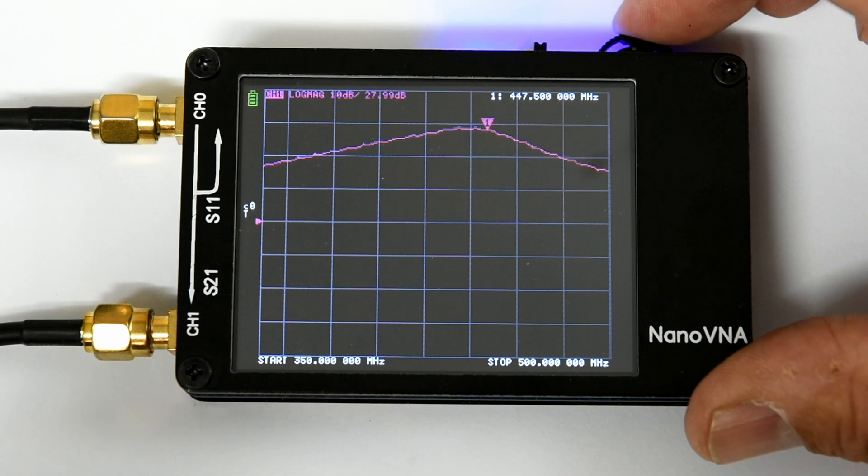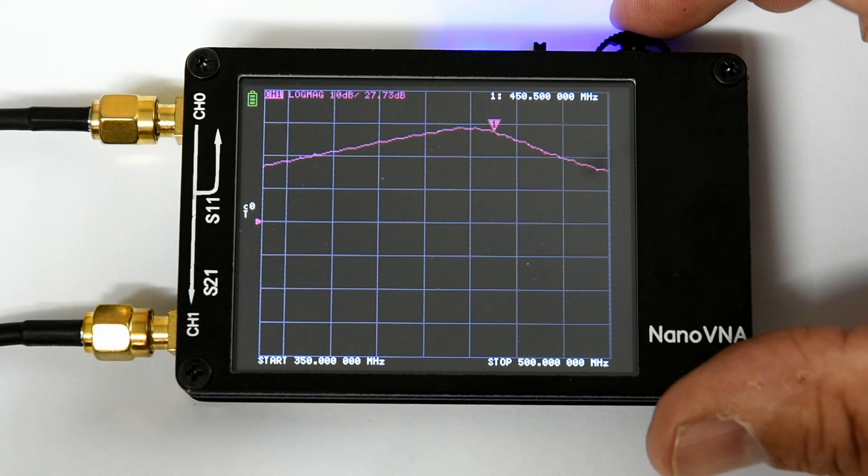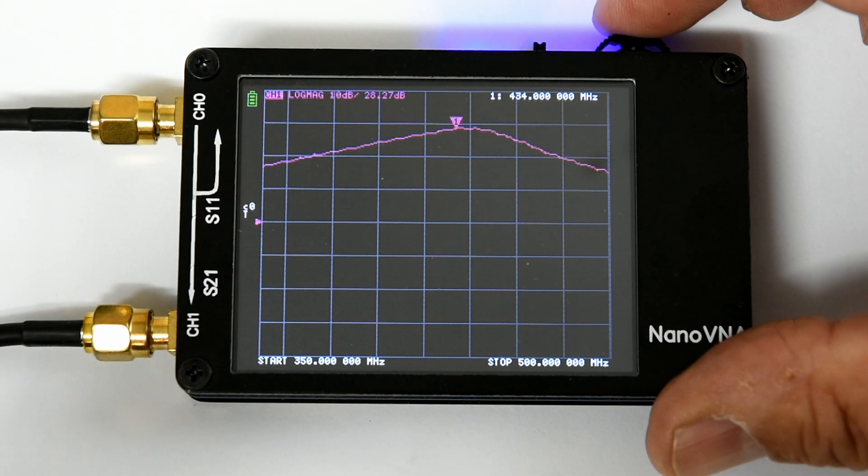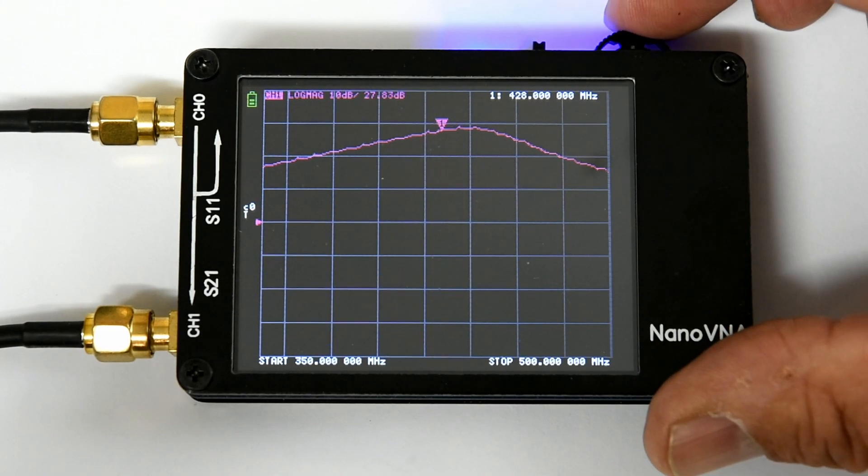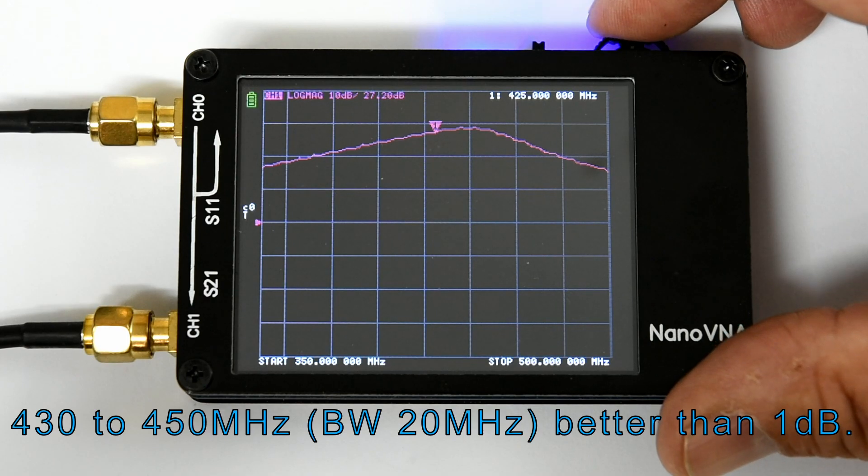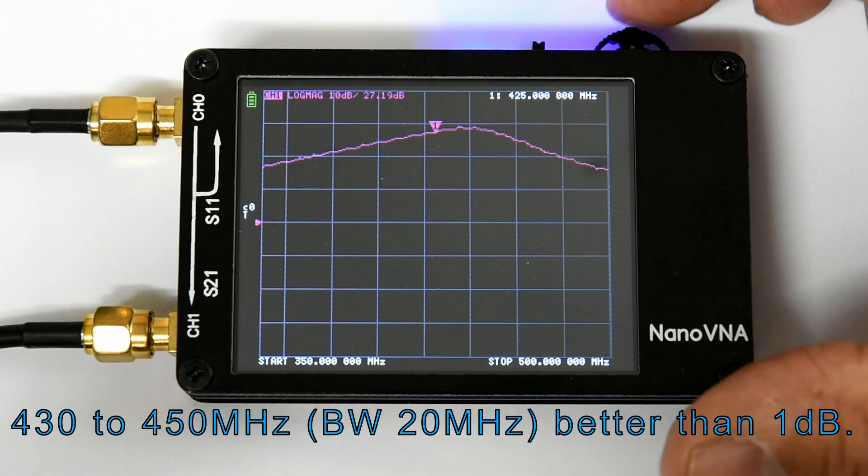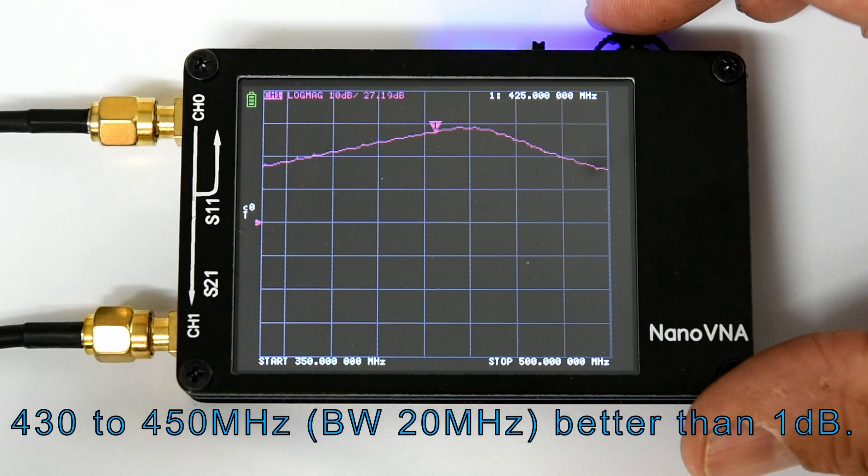And then we roll off. 1 dB to 450. And then probably another dB down to 420. So that's a pretty good band pass. We would have measured it at 3 dB. We'd well outside the 70 centimeter band.